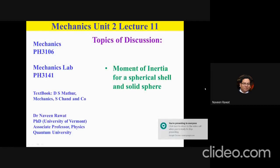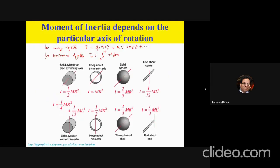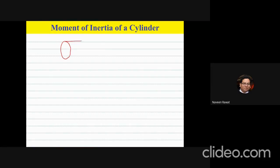The plan today is to do the moment of inertia for the spherical shell and for the sphere. But before that, let's consider the cylinder rotating about an axis perpendicular to its length. Here, the cylinder has some total mass m, radius r, and length l.